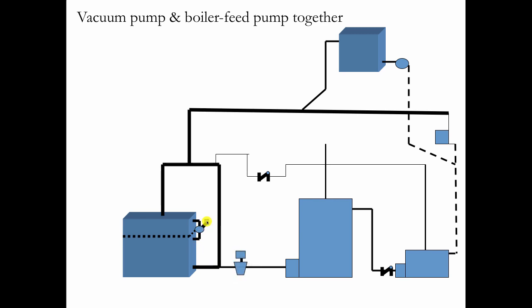So then you take your pump controller, and you wire it to the motorized valve, and the motorized valve has an end switch that starts and stops the boiler feed pump. And that's the way around that problem of the flooding, when you've got a boiler feed pump combined with a vacuum pump.